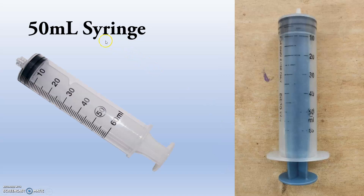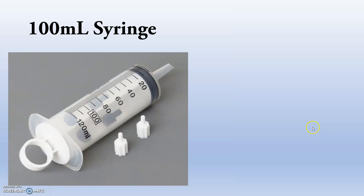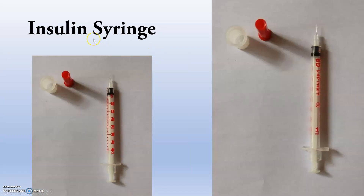This is the 50 ml syringe — the preferred volume is 50 ml, but you can see it can take around 60 ml as well. This is an older syringe. And this is the 100 ml syringe — you can see it has a box marking for 100 ml because it is preferred for that volume, but it can also be used up to 120 ml.